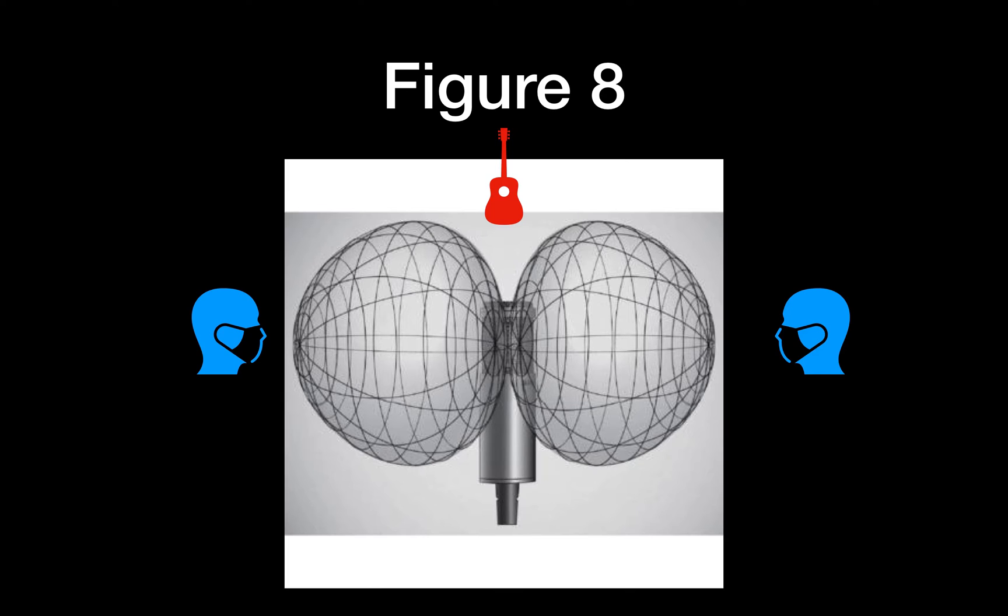If you had a pianist who was also a singer, in this situation you would have a singer on one side and the piano strings on the other side, you could capture that. If you had two guitarists or two acoustic instruments facing each other, you'd be able to convert those sound pressure waves into electrical voltage and it would be effective at that.